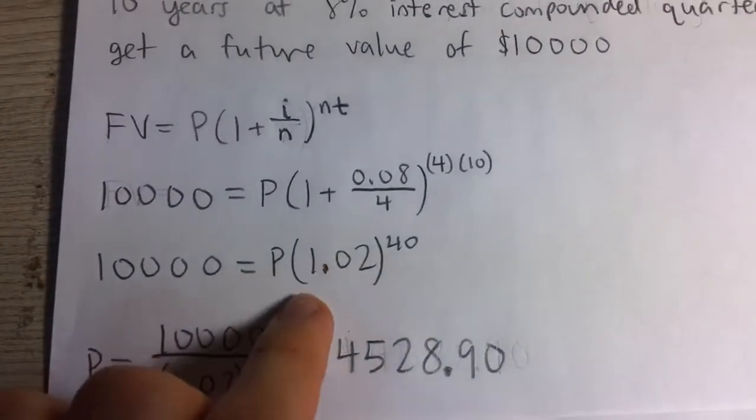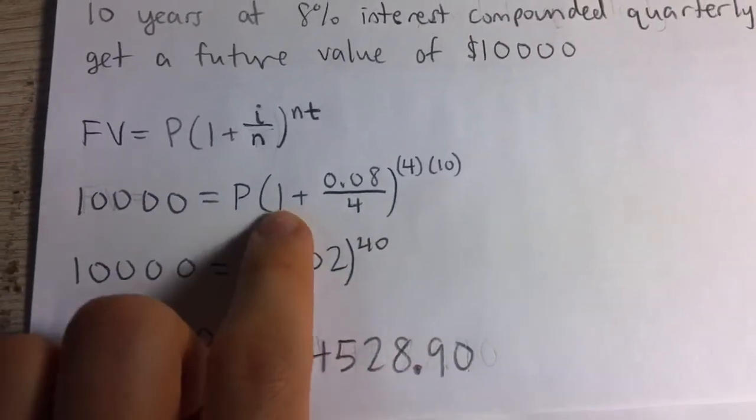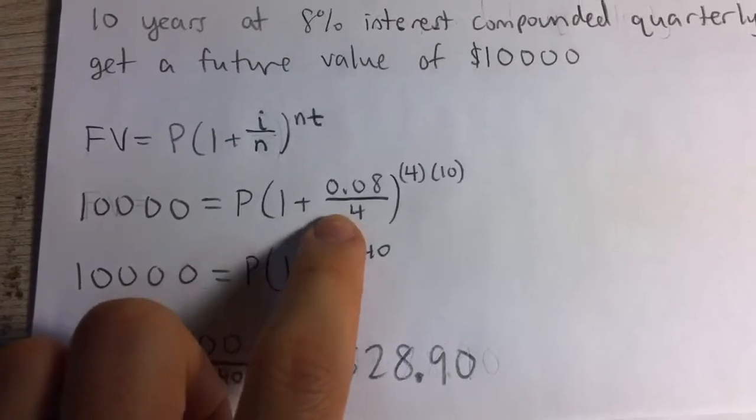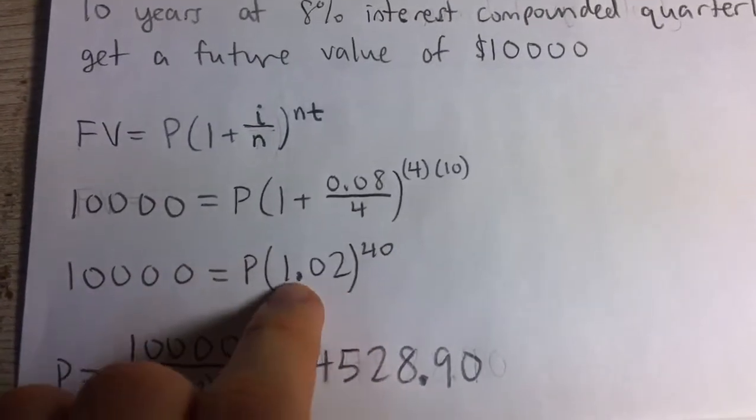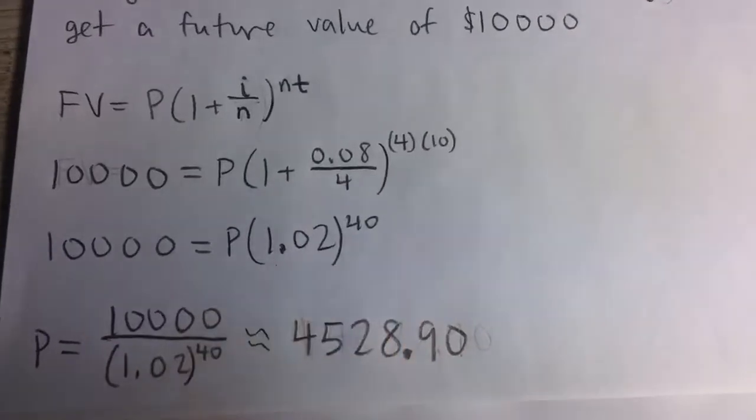Now we're solving for P. I simplified this rate part: one plus 0.08 over four. That simplifies to 1.02, and four times 10 is 40.